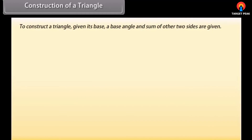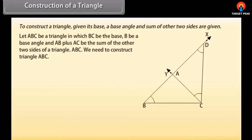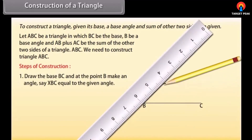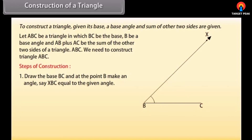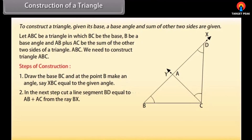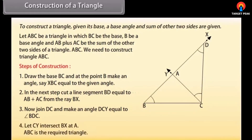Construction of a triangle given its base, a base angle, and the sum of the other two sides. Let ABC be a triangle in which BC is the base, B is a base angle, and AB plus AC is the sum of the other two sides. Steps: draw the base BC and at point B make angle XBC equal to the given angle. Cut line segment BD equal to AB plus AC from ray BX. Join DC and make an angle DCY equal to angle BDC. Let CY intersect BX at A. Then ABC is the required triangle.